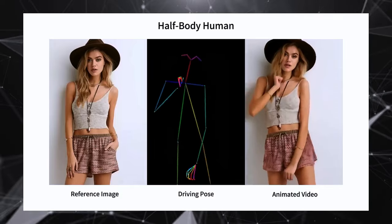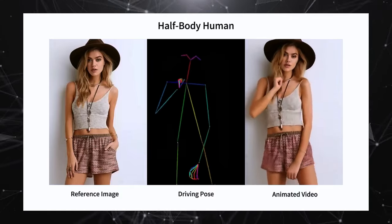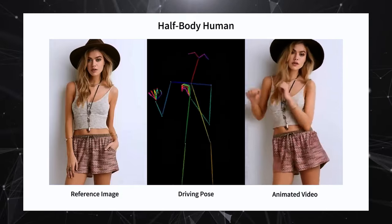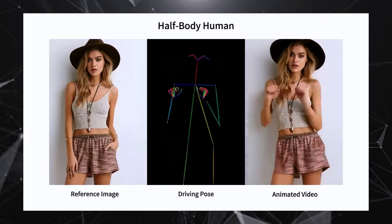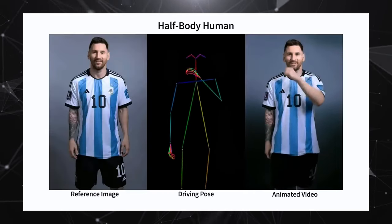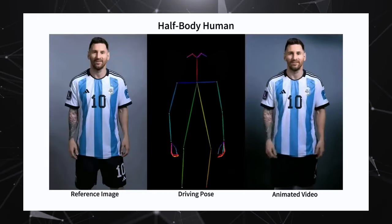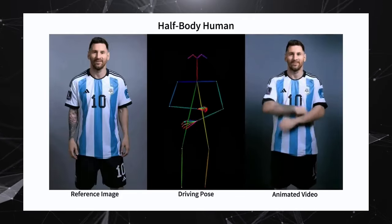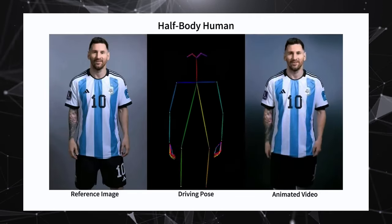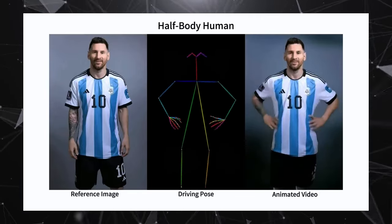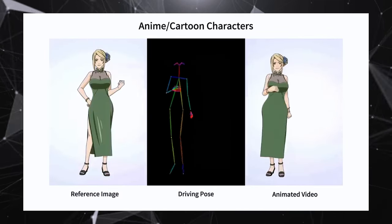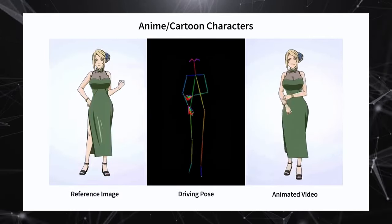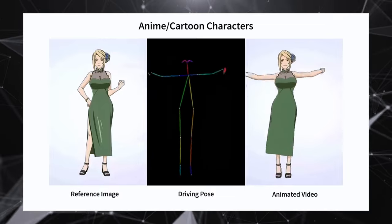Second, because the model relies on information from a single perspective in images, generating unseen parts during character movement becomes a tricky puzzle, posing potential instability issues — like trying to predict what's happening behind a dancer when you can only see them from the front. Third, due to the utilization of DDPM, the model exhibits lower operational efficiency compared to non-diffusion model-based methods.